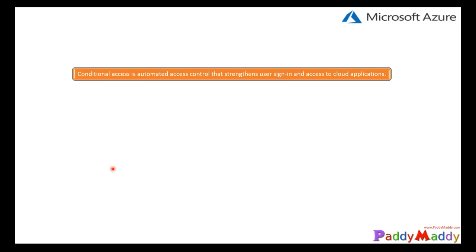To get the conditional access benefits, you need to have at least an Azure AD Premium P1 license, and if you have P2, that's really good so that you can use most of the other Azure AD Premium features also. In the upcoming demos in the next lectures, we will be working with the P2 license so I can show you all the features that are part of conditional access as well as Azure AD.